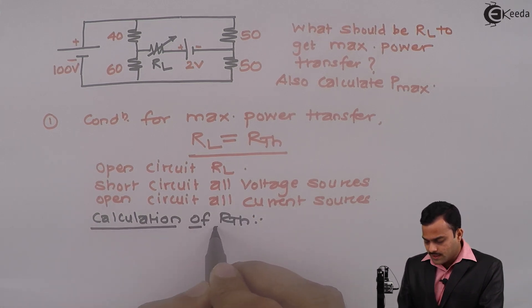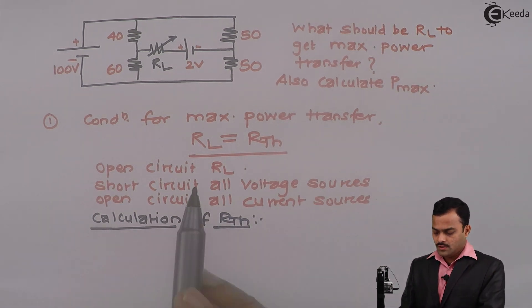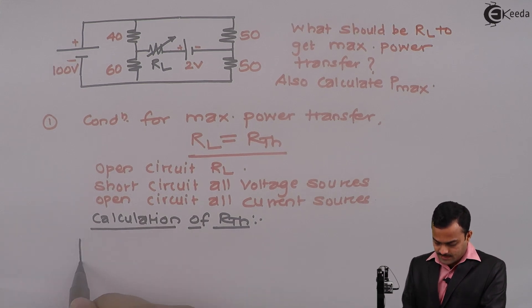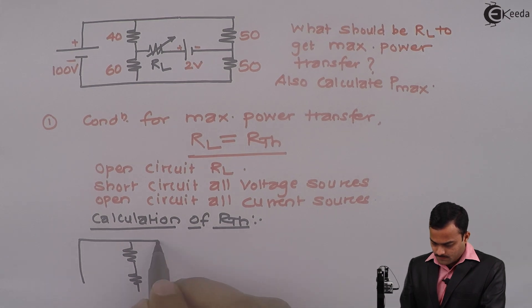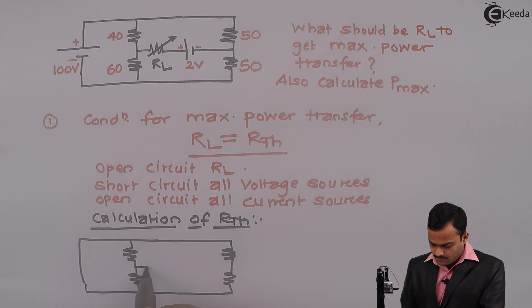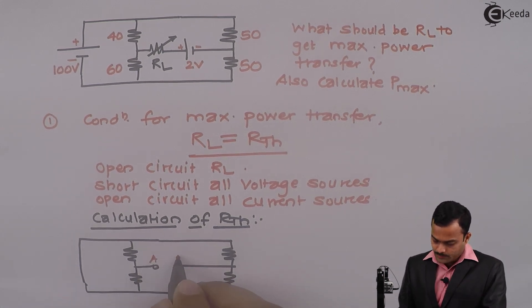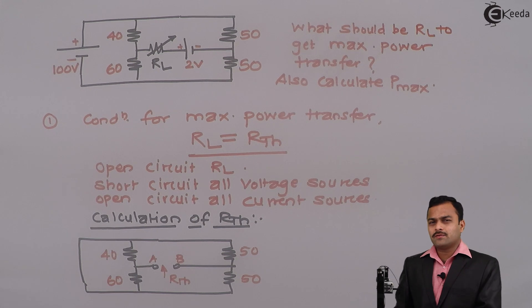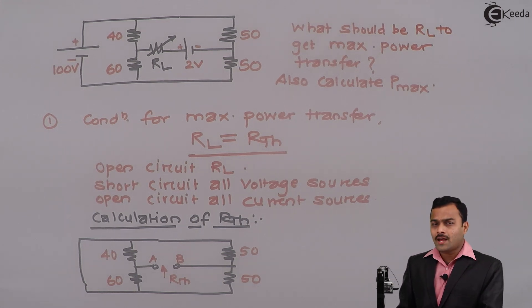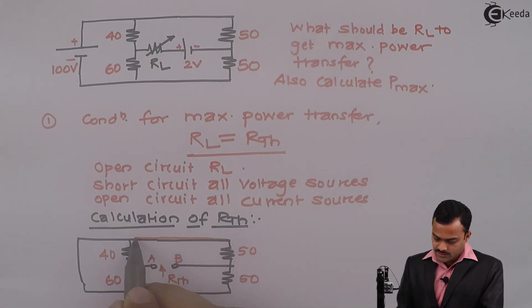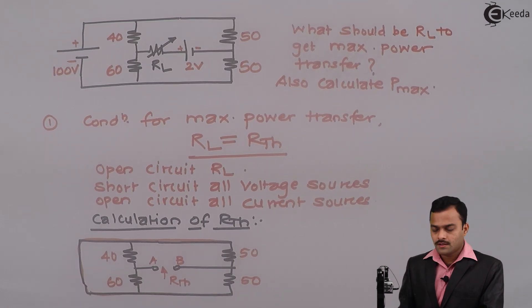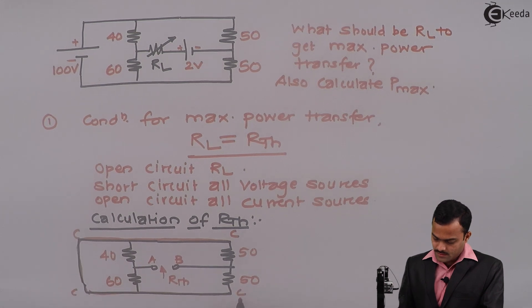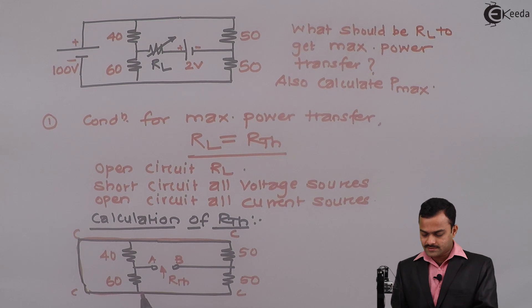It is absolutely the same as the procedure for Thevenin's theorem. After doing these modifications I will get a structure with points A and B, after removal of RL, through which we have to find out the Thevenin's resistance. The resistances are 40 ohm, 60 ohm, 50 and 50 ohm. I'm not able to figure out any series and parallel connections directly, so I will redraw the circuit by considering one more point. This part of the circuit is the same point which I can call point C, so in all I have 3 points A, B and C.